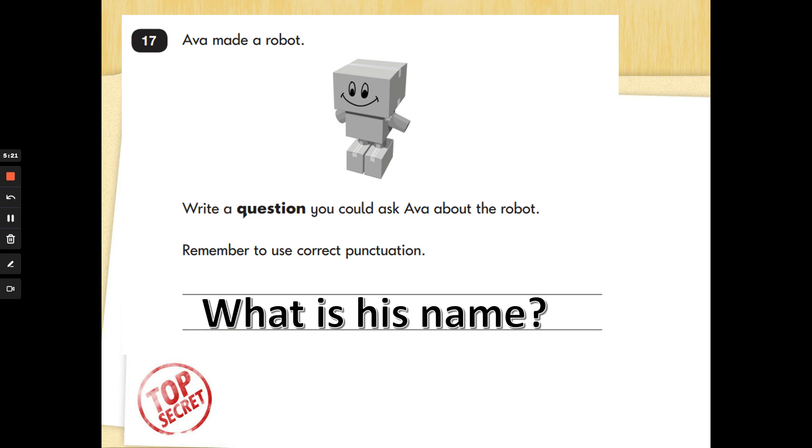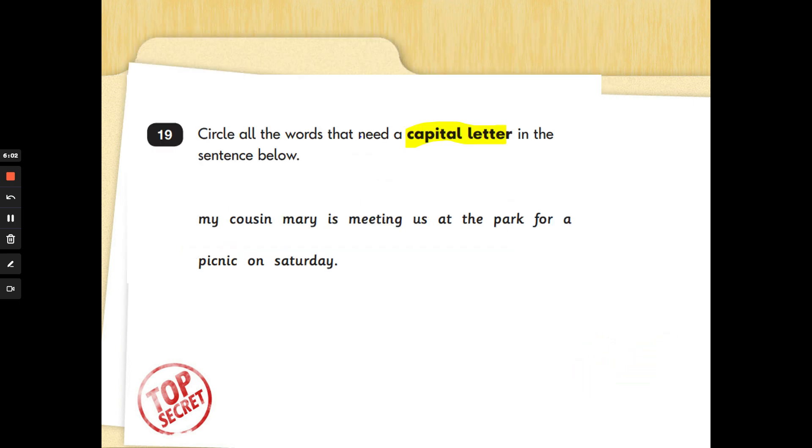Number 17. Ava made a robot. Write a question. You could ask Ava about the robot. Remember to use the correct punctuation. Here is my example. And remember to use the correct punctuation is very important. You could write a beautiful question. But if you don't remember your capital letter and your question mark, you will not get this tick. My question is, what is his name? You could have other questions like, how long did it take to make him? Why did you make a robot? What games do you play? Pause the video and write down one or two questions and ask someone at home to check that your questions are correctly punctuated. Well done, guys.